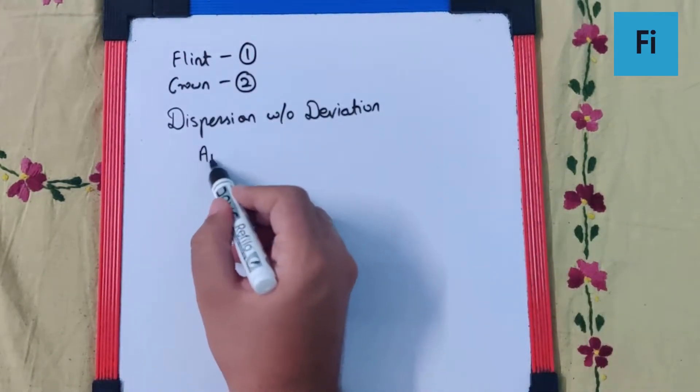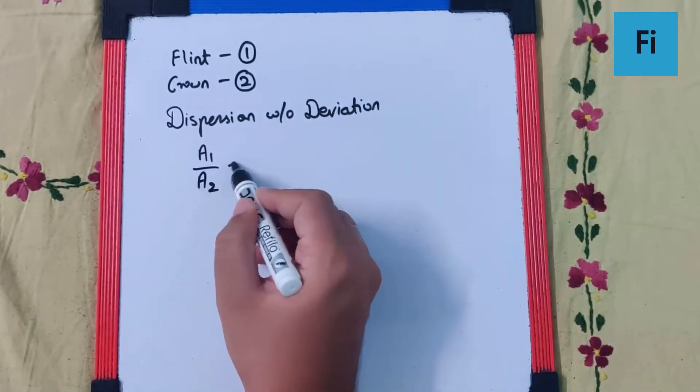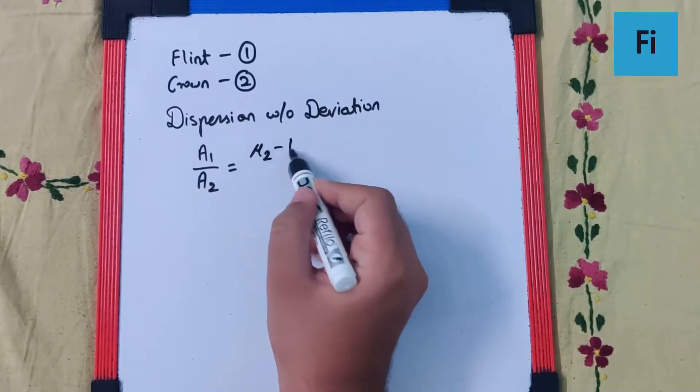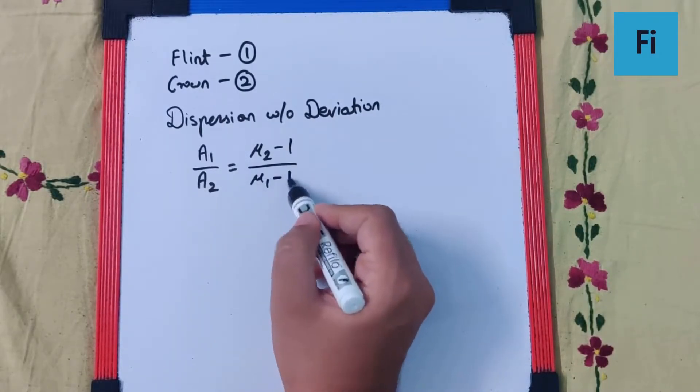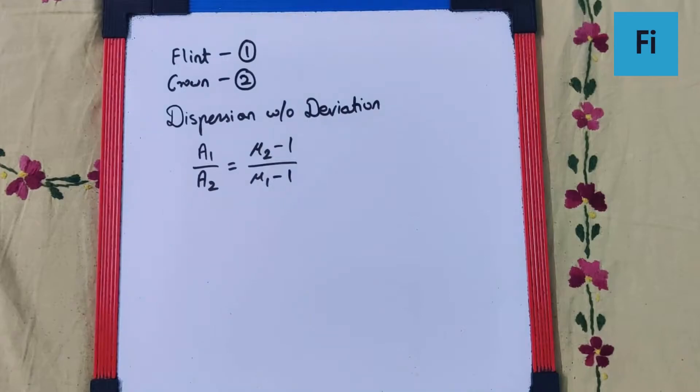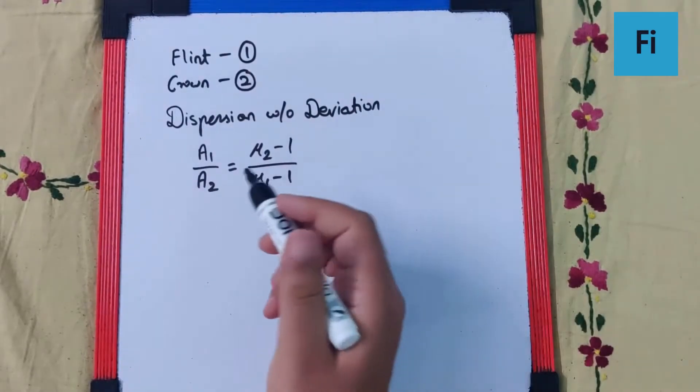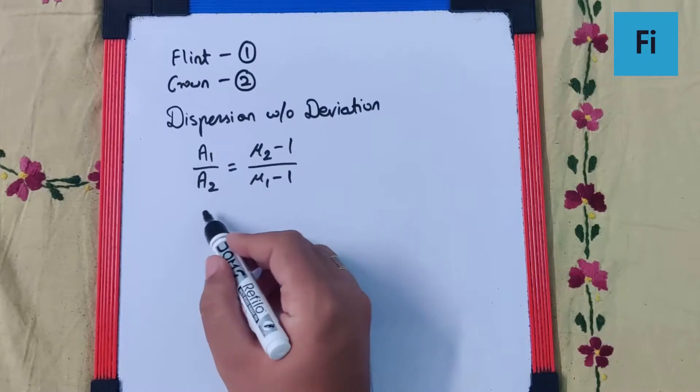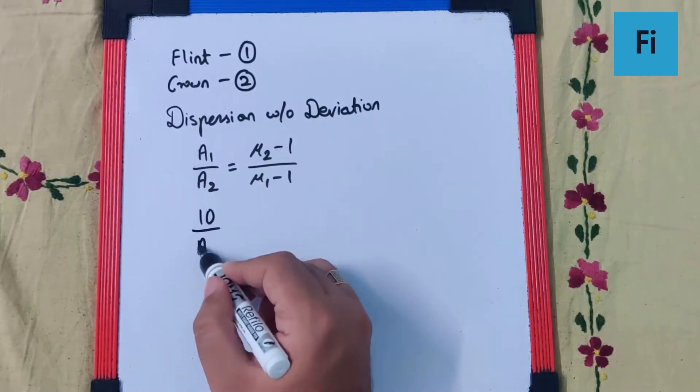This formula is a1 upon a2 equals mu2 minus 1 upon mu1 minus 1. So this is the logic. The angle a1 is given as 10 degrees. A2 we have to find.